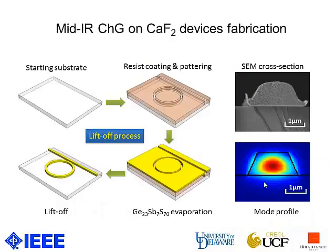For example, we have fabricated a mid-infrared chalcogenide glass resonator on CaF₂ substrates. The reason we chose CaF₂ substrates is because it has a transparency window beyond 7 microns, and a relatively low refractive index of 1.4.